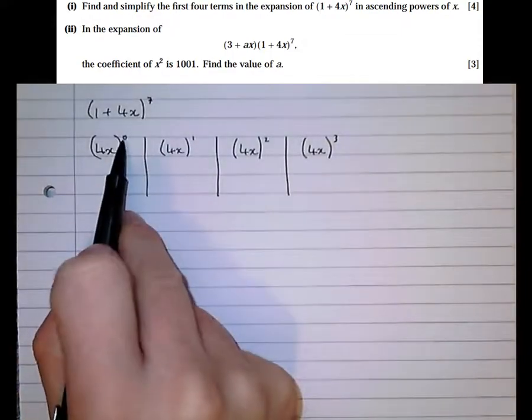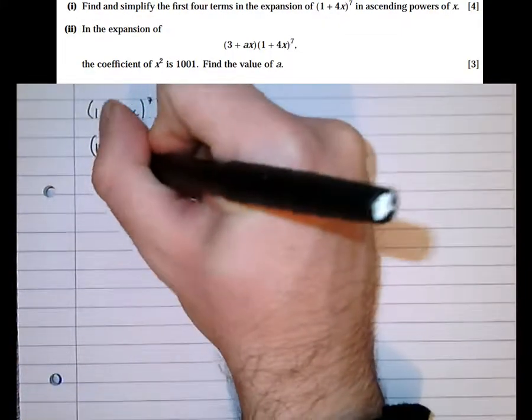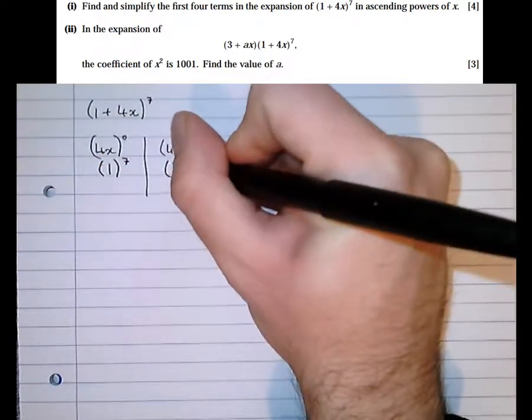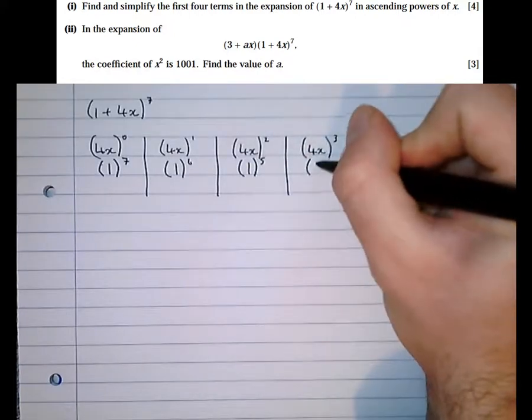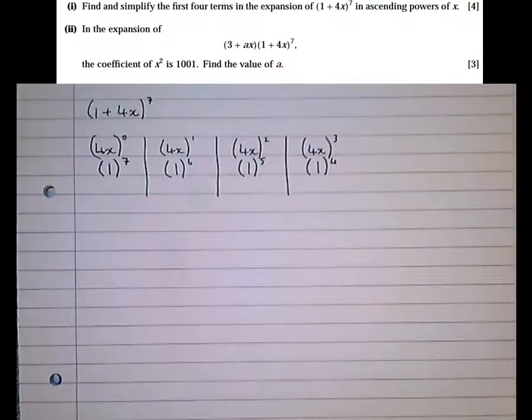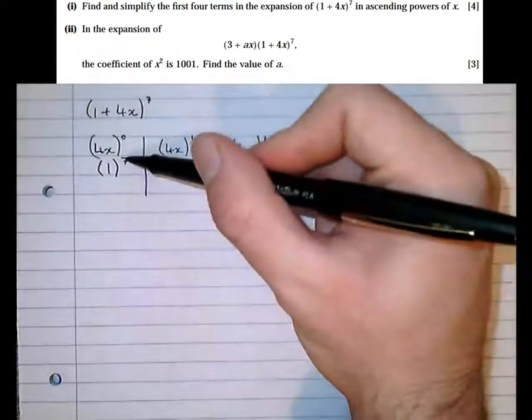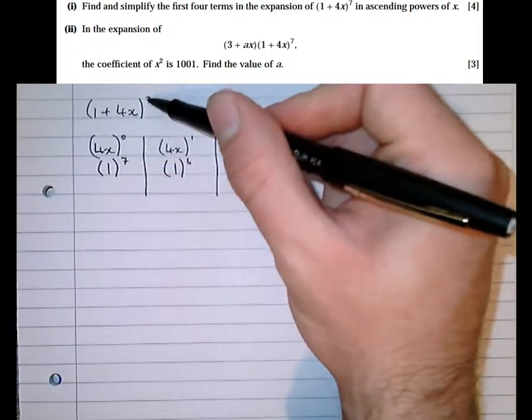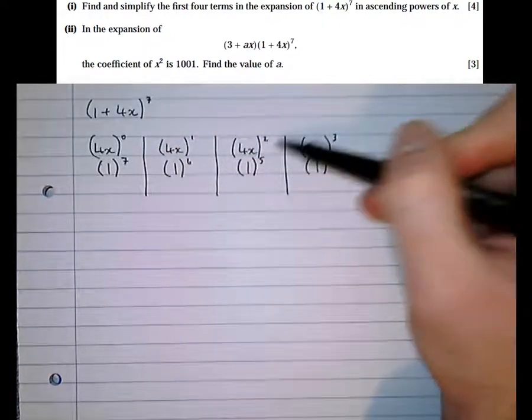That's the lowest power of x, which gives rise to the highest power of the other term, 1. So we've got 1 to the 7, 1 to the 6, 1 to the 5, and 1 to the 4. A quick check we can perform here to see that we're doing it right is both of these must add up to the power of the bracket. So 7 add 0 is 7, 6 add 1 is 7, yeah, we're doing it all right.